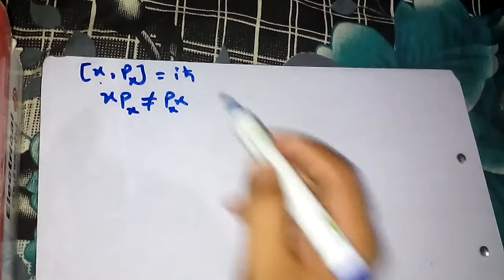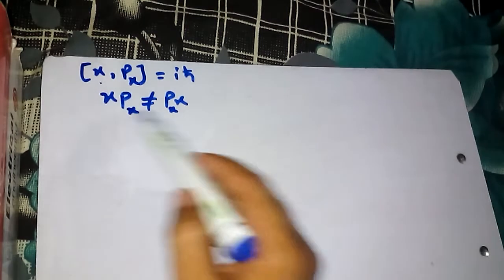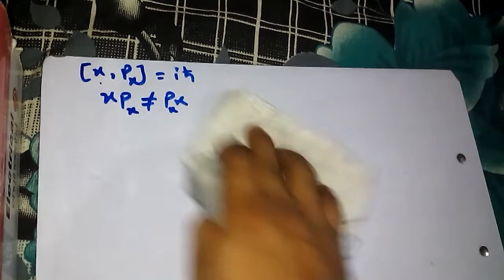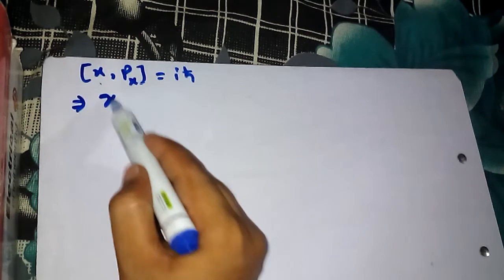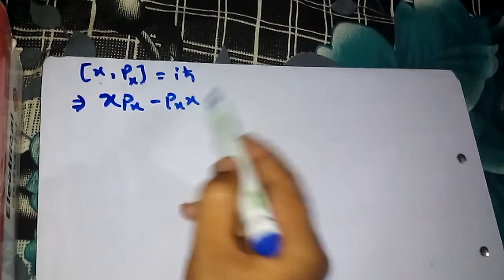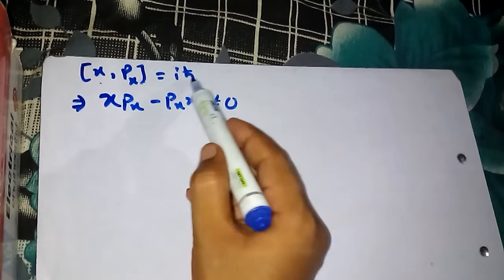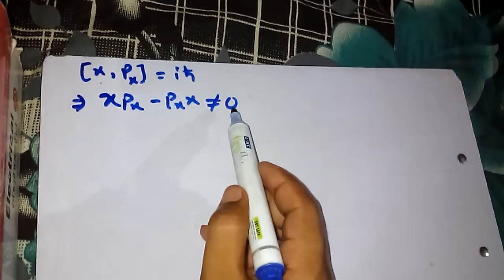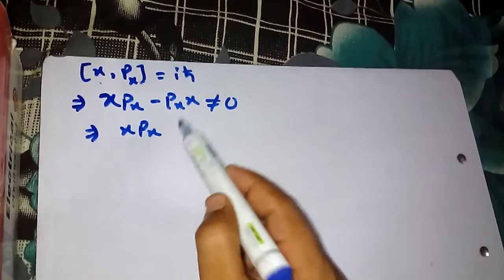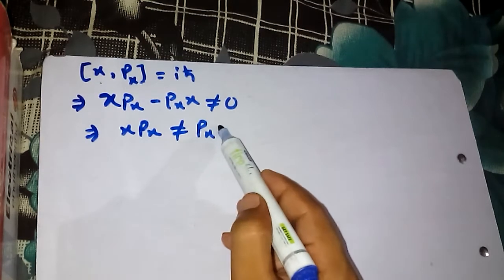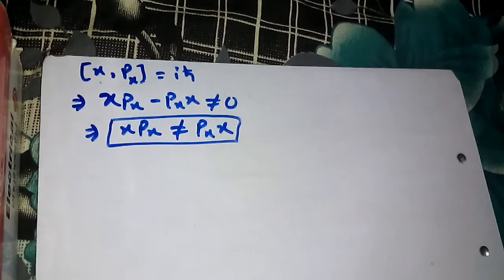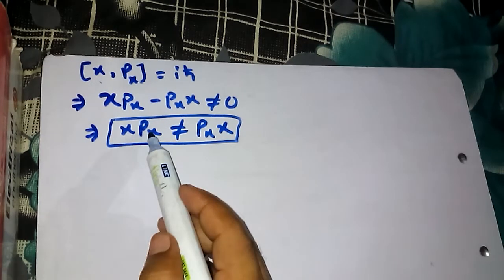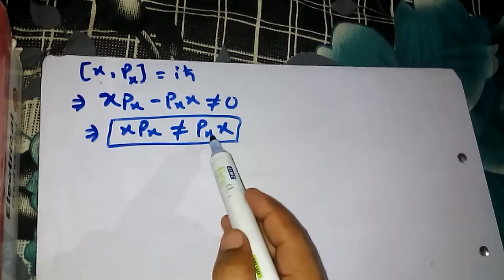The reason this relation [X, Px] ≠ [Px, X] comes about is that the commutator means X times Px minus Px times X, and this is a nonzero value. When this can be a nonzero value only when XPx is not equal to PxX. That's why order is important — if you write X first then Px, you cannot write the same thing as PxX.